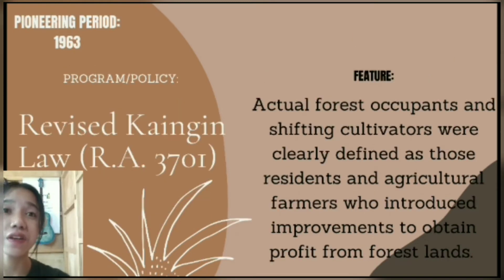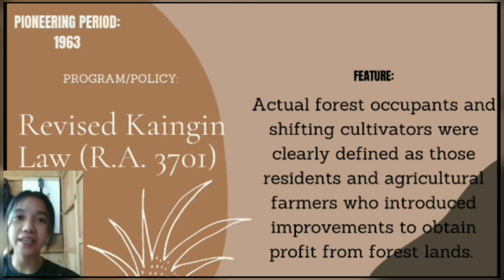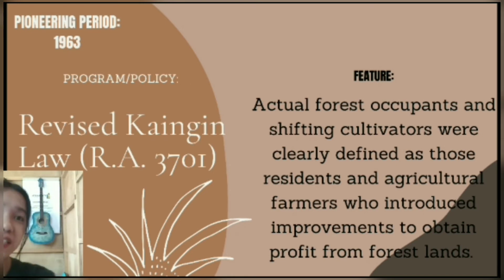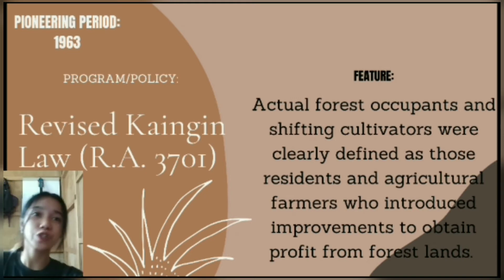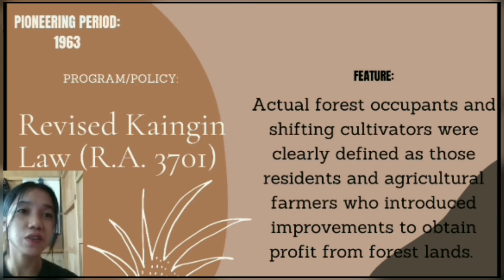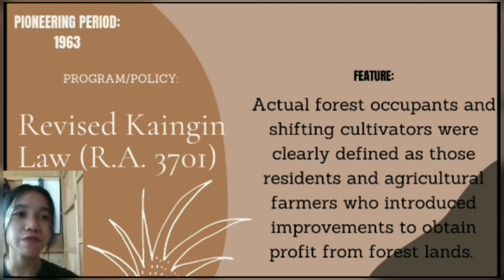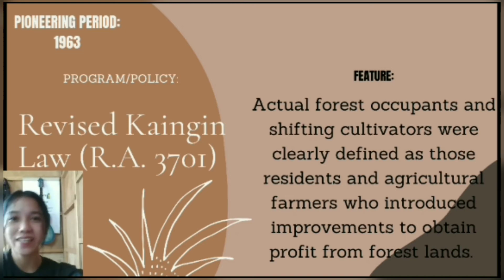Also in the pioneering period, in 1967, the Revised Kaingin Law or RA 3701 clearly defined actual forest occupants and shifting cultivators as those residents and agricultural farmers who introduced improvements to obtain profit from forest land. That concludes the pioneering period.